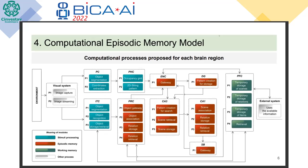Now that we have identified the structures, we identify the tasks that each structure helps with. For example, we have the visual system — a set of brain areas that helps with the identification of objects and pictures. Although it is out of the scope of this paper, in theory it helps us acquire information from the environment. In this model we use the visual system to capture the image and stream it.